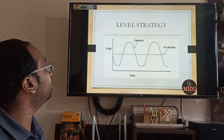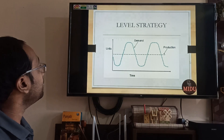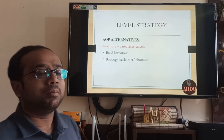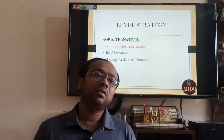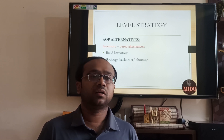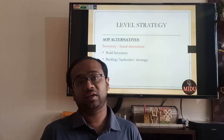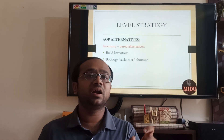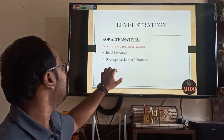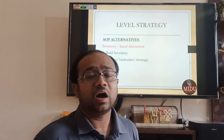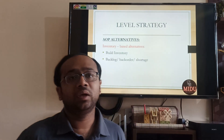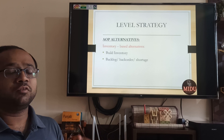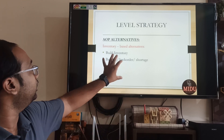This, my dear friends, is known as Level Strategy — maintaining a particular level. In this strategy the alternative is inventory-based. You can build inventory in the lean season, knowing that in future there will be requirement. For example, if demand was 700 against a production of 1000, the extra 300 becomes additional inventory. The second alternative can be a backlog, back-order, or shortage — where some previous orders are carried forward into the next month.